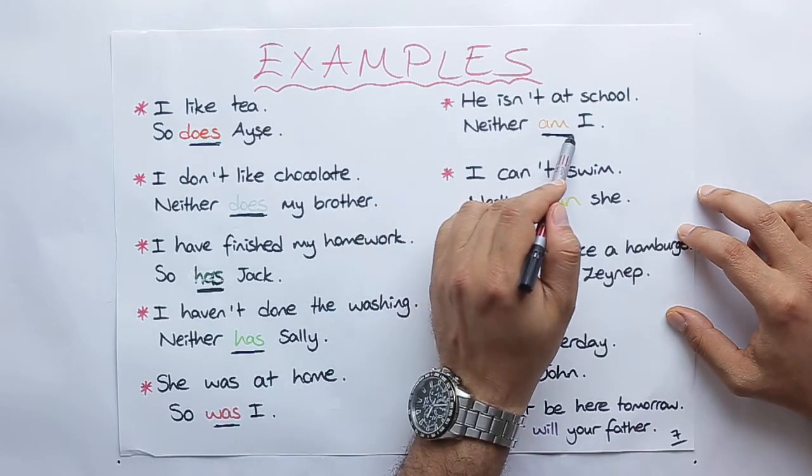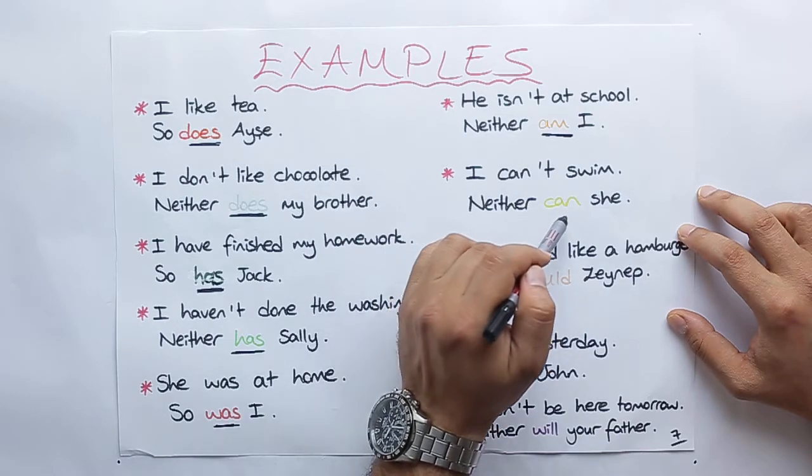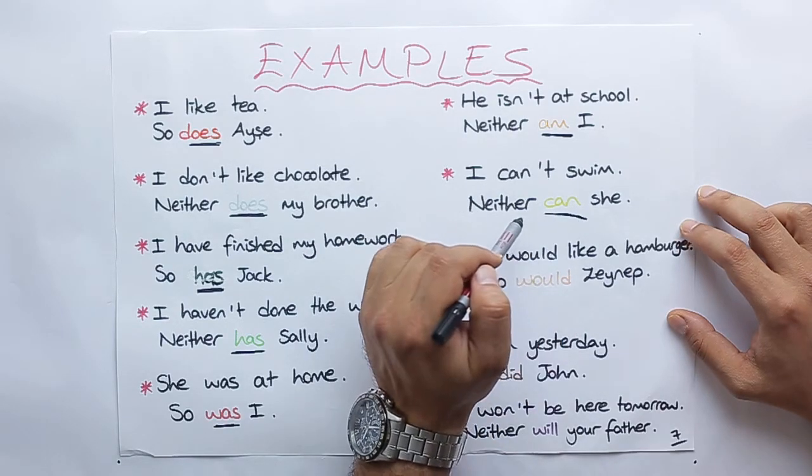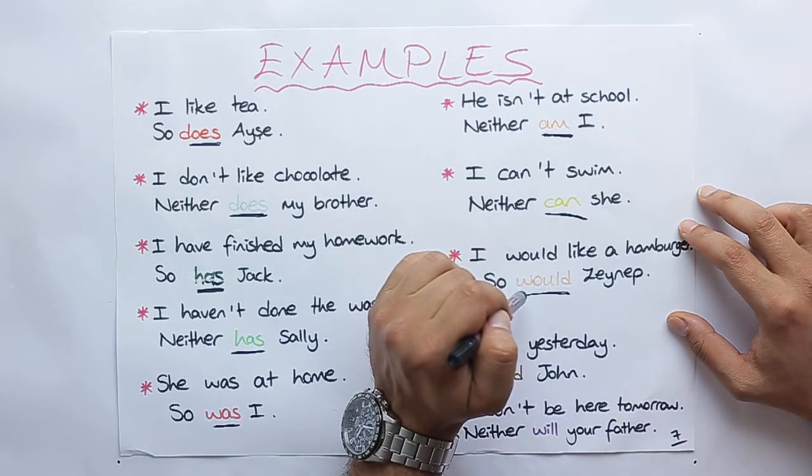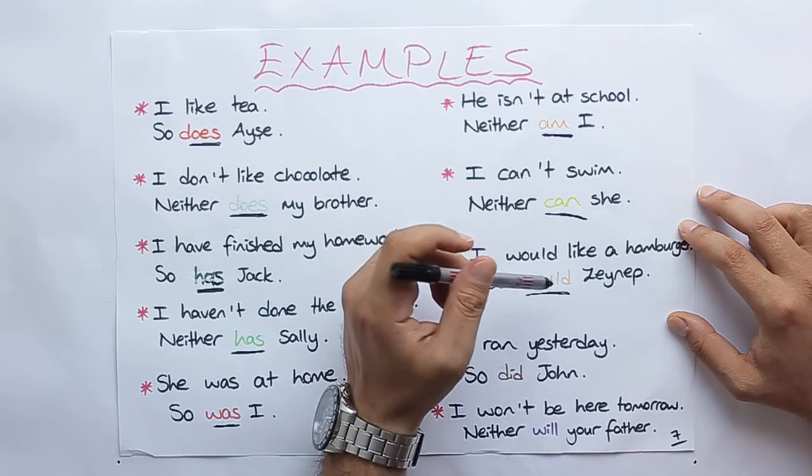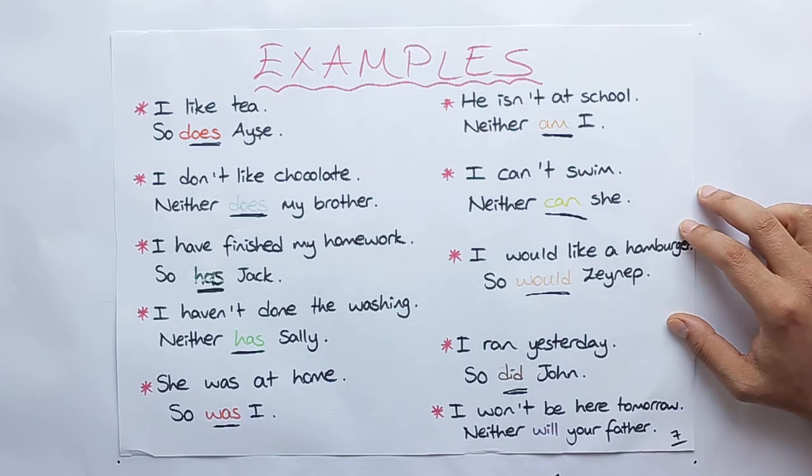I can't swim, neither can she. I would like a hamburger, so would Zeynep. I ran yesterday, so did John. And for the last example, I won't be here tomorrow, neither will your father.